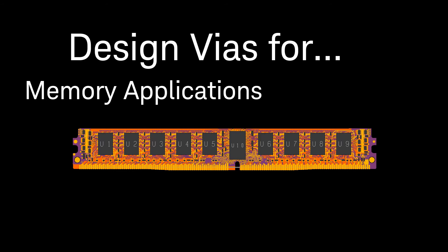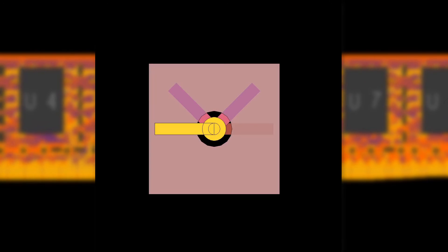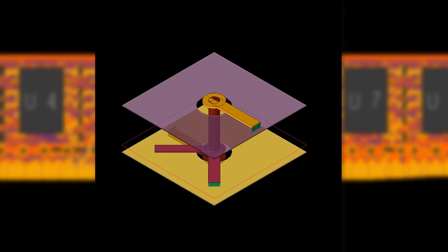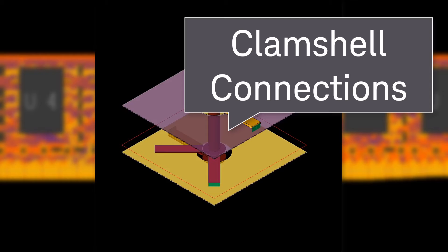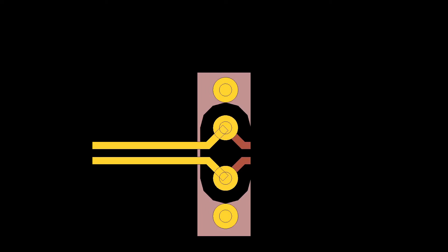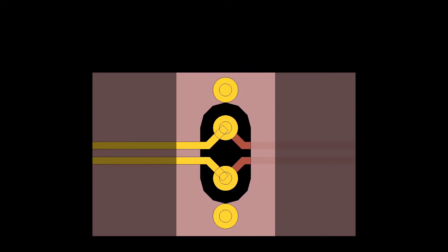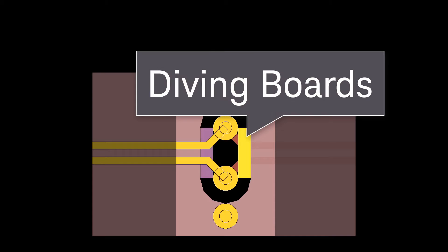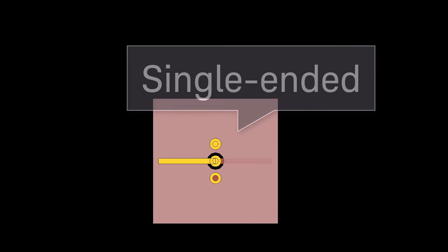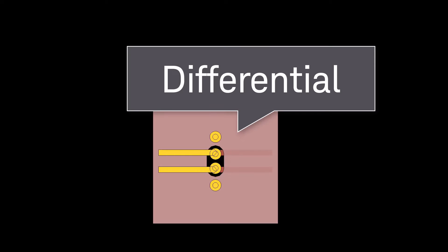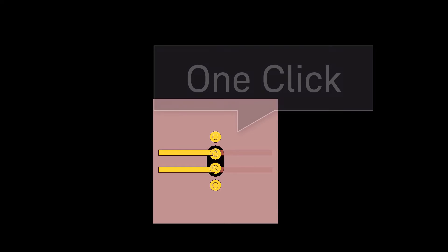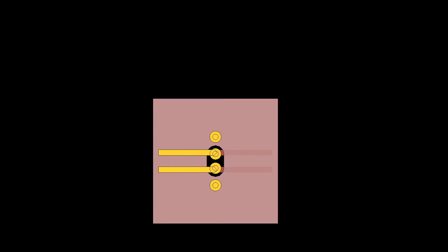If you need vias for memory applications, look no further. Via designer now offers top and bottom clamshell connections. With this update, via designer provides a practical way to keep trace impedance controlled as you enter the vias. By using diving boards, it is one click to go from a single-ended via to differential vias in via designer. In this release, one click also generates a via array.